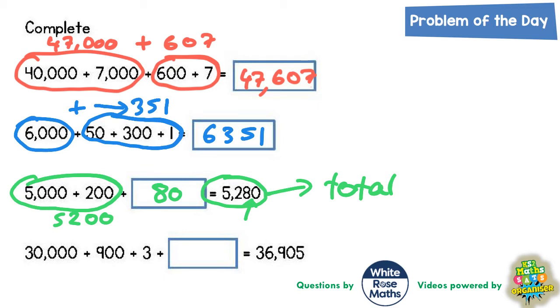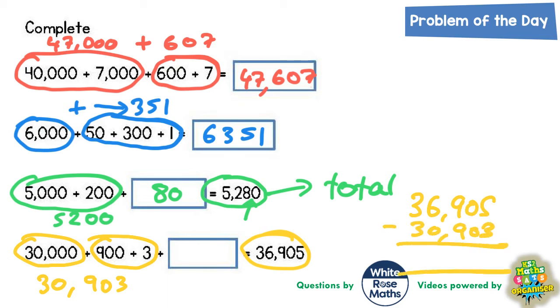For the last one, we're told the total is 36,905. Let's see what we've got so far: 30,903. We need to see what extra we need to make it 36,905. If we do 36,905 take away 30,903, we'll see what the extra bit is. 5 take away 3 is 2, 0 take 0 is 0, 9 take 9 is 0, 6 take 0 is 6, and 3 take 3 is 0. We need an extra 6,002. That's the answer. Some of you may have been able to do that in your head.